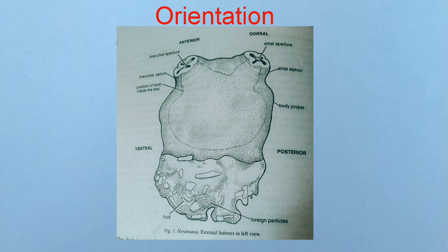Body of Herdmania has definite but peculiar orientation. The two flat surfaces represent the right and left lateral sides. The anterior and dorsal ends are demarcated by the branchial and atrial apertures. Their opposite sides represent posterior and ventral ends.